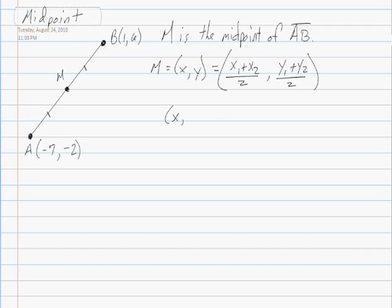Then our midpoint x, y is equal to negative 7 plus 1 divided by 2, and negative 2 plus 6 divided by 2.